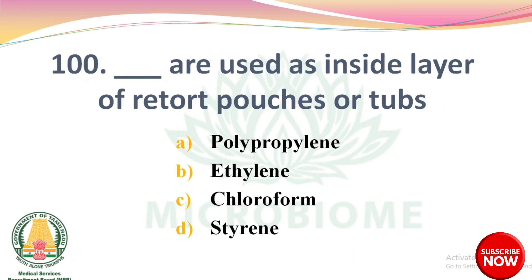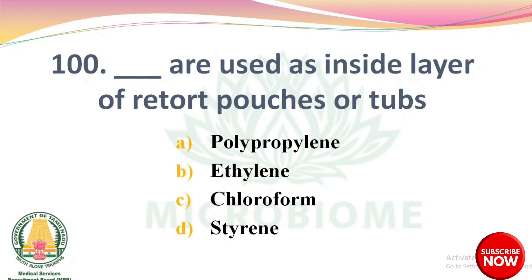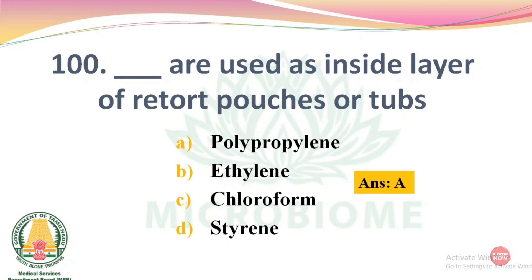Next question: dash are used as inside layer of retort pouches or tubs. Options: polypropylene, ethylene, chloroform, styrene. The right answer is Option A: polypropylene. If you have any doubt, please ask in the comment section. Remaining units will be discussed in upcoming classes, so please subscribe to our channel. Thank you.